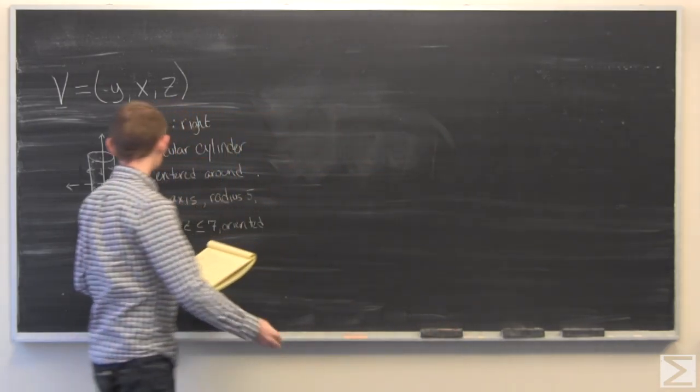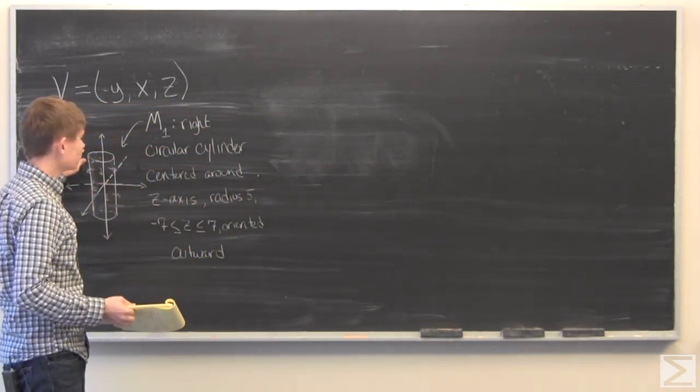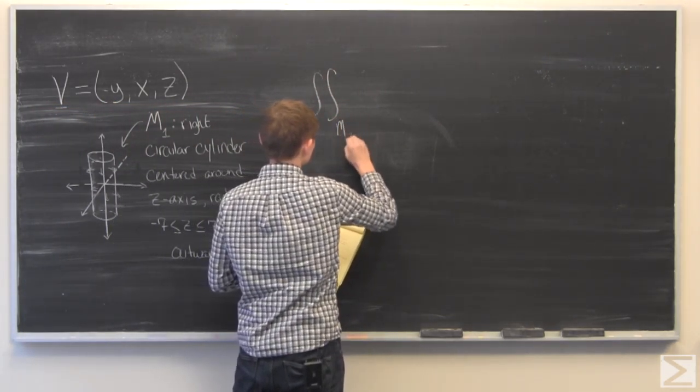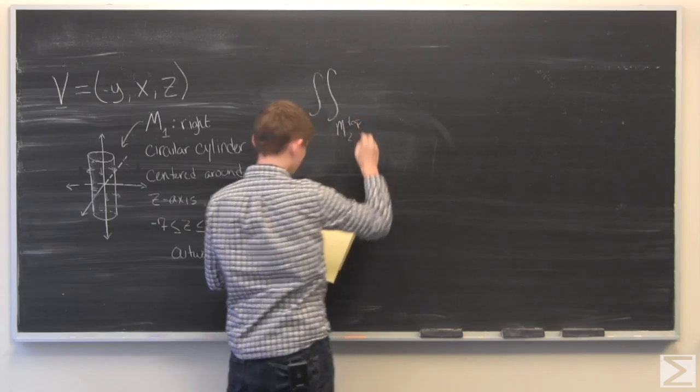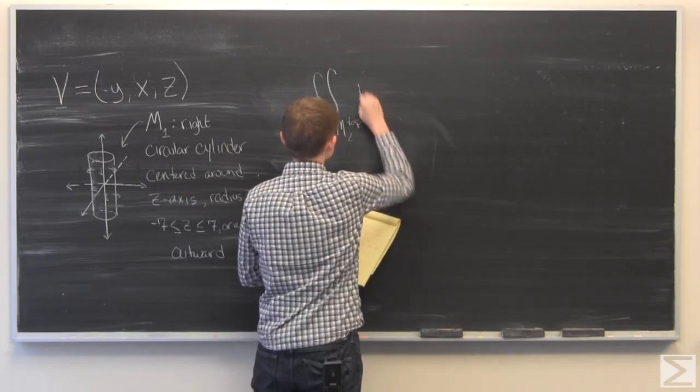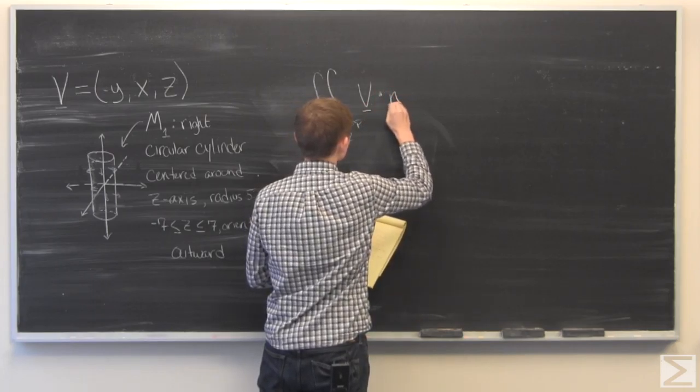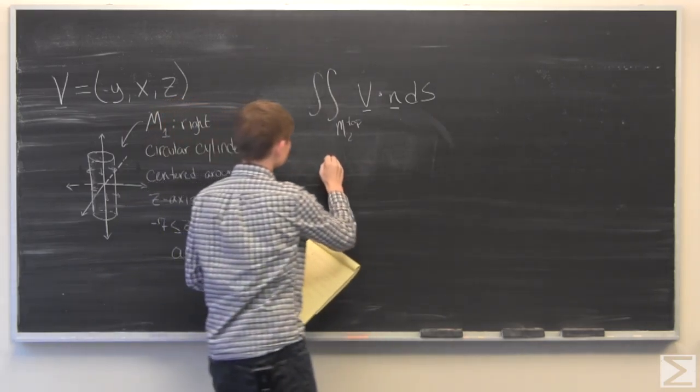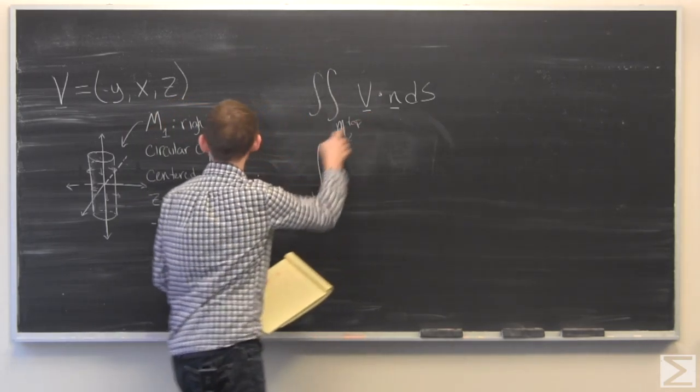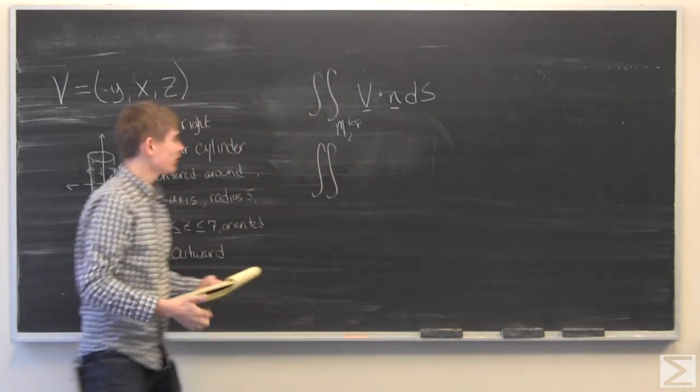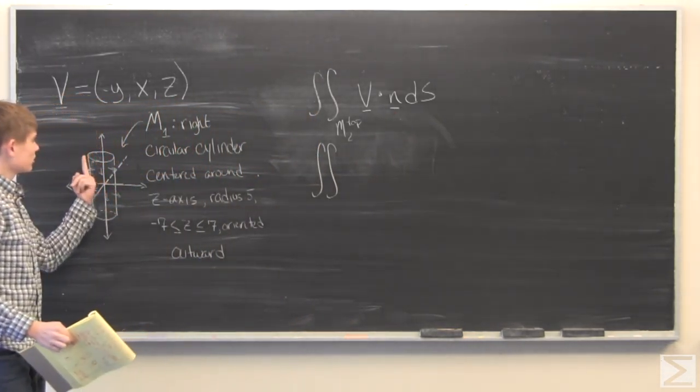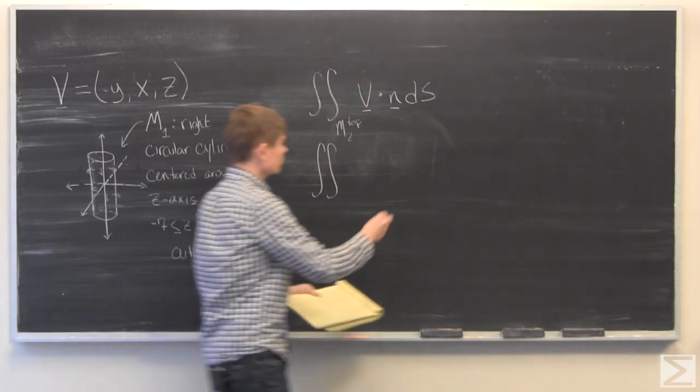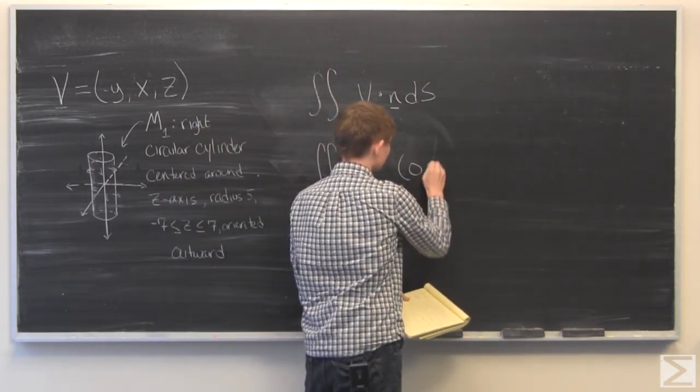So we're going to start with the flux through M2 top, and we have the integral. So what we can do here is, well first off let's talk about the normal vector. Normal vector is going to be pointing straight up since this disk is perpendicular to the Z axis, so we're going to have 0, 0, 1.